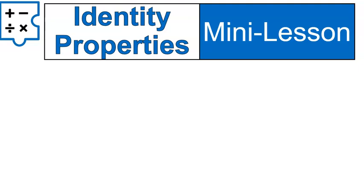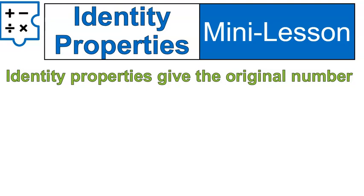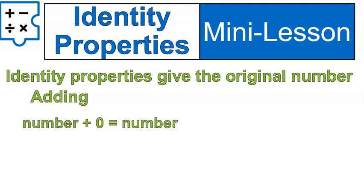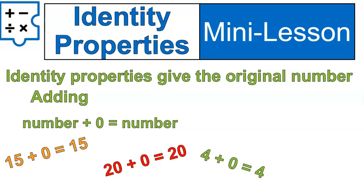Let's talk about the identity property. The identity property basically gives you back the original number. We can do the identity property with adding by adding a number plus zero, and we get the same number back. For example, fifteen plus zero equals fifteen — that's the identity property of addition. Four plus zero equals four. Twenty plus zero equals twenty. Seven plus zero equals seven. Any number plus zero gives you that original number back again.